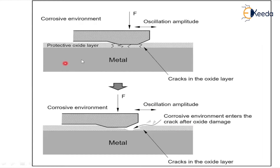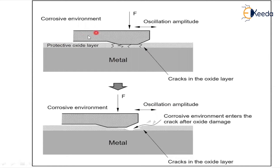Observe these two images — there is a difference between them. In the first image, an oxide layer is protecting the metal. A continuous cyclic load is applied on the metal, and due to that, a crack forms in the oxide layer.